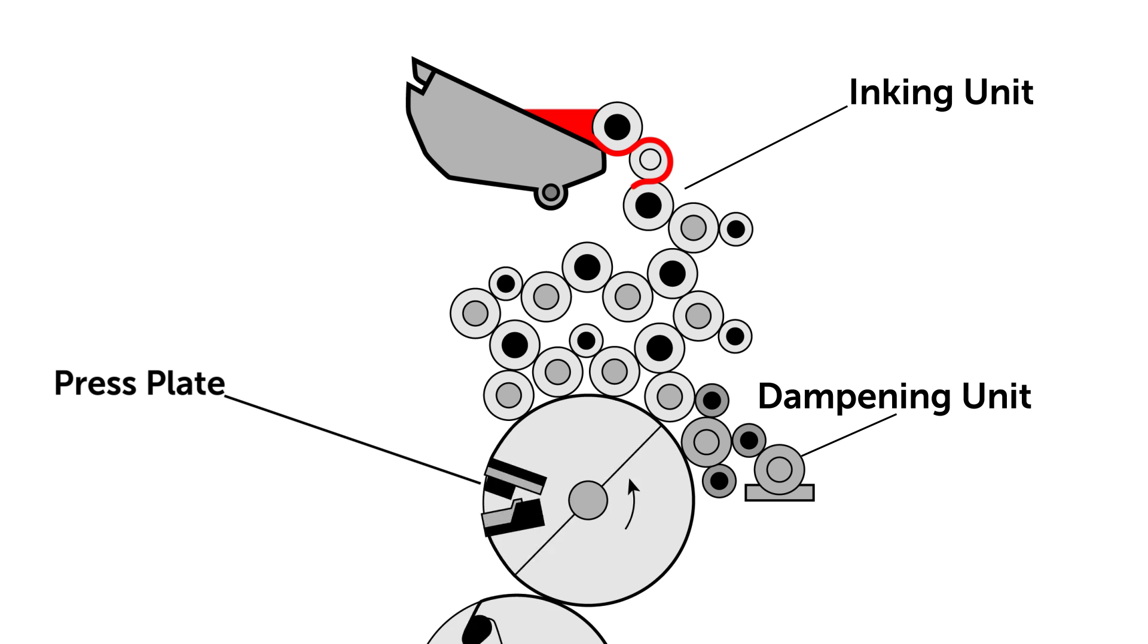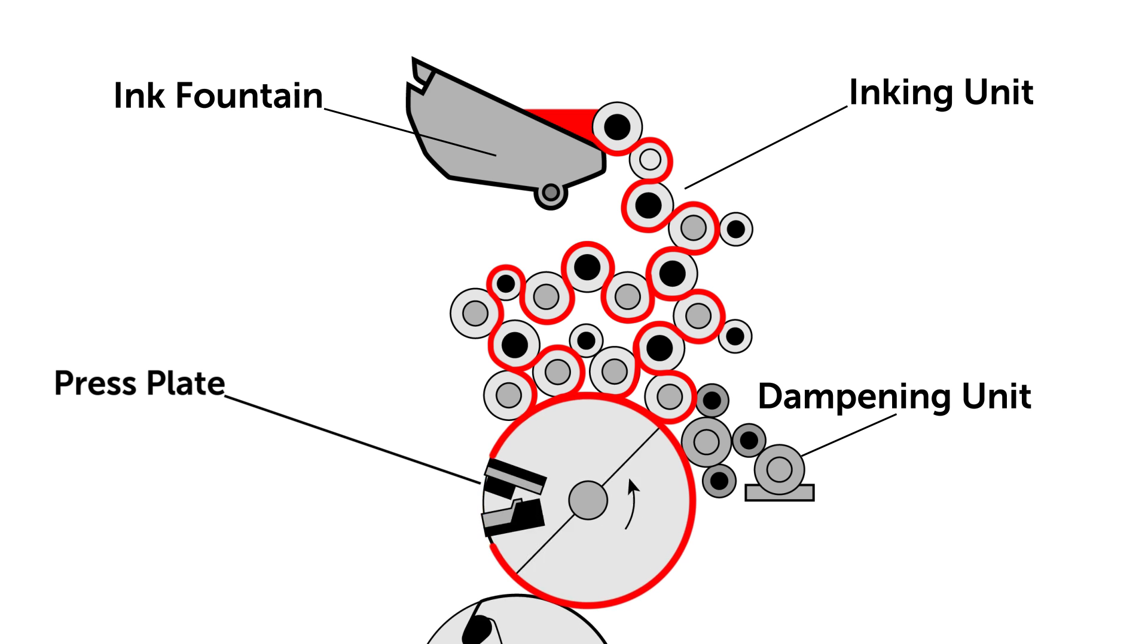The press plate then passes the inking unit. Starting from the ink fountain, the ink will pass through multiple rollers, called a roller train, which then sticks to the image area of the press plate.